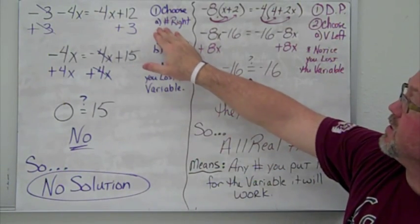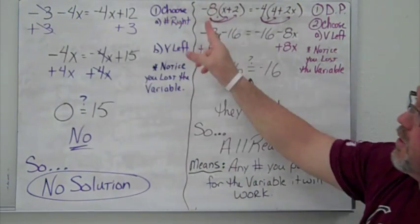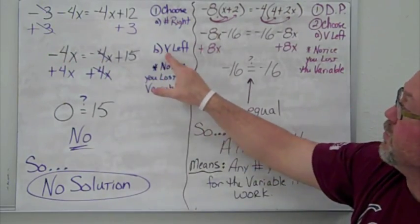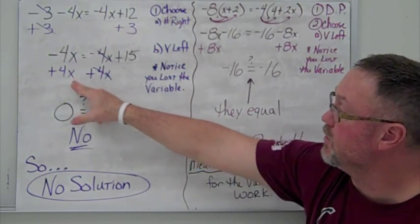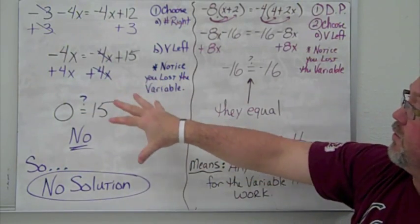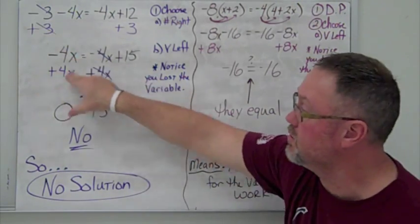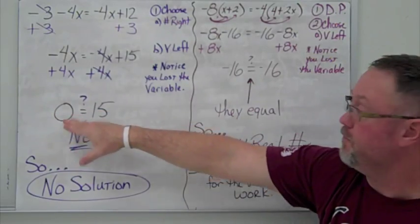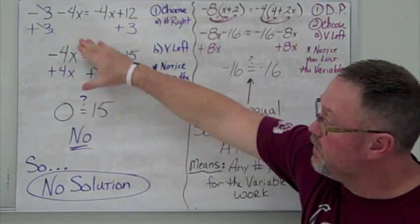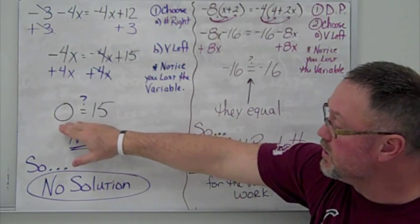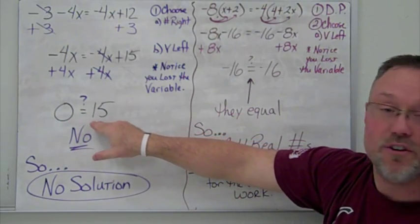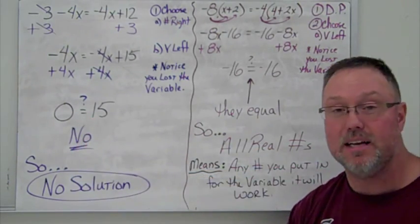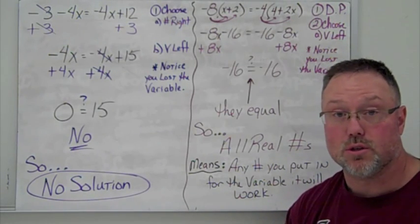In this next example, I'm going to choose to move the number to the right using a positive 3, then bring the variable to the left using the opposite operation. What you notice here is that you lose your variable — it becomes 0. We finish the left side and get 0, the right side gives 15. Does 0 equal 15? No — so this is a no solution problem.